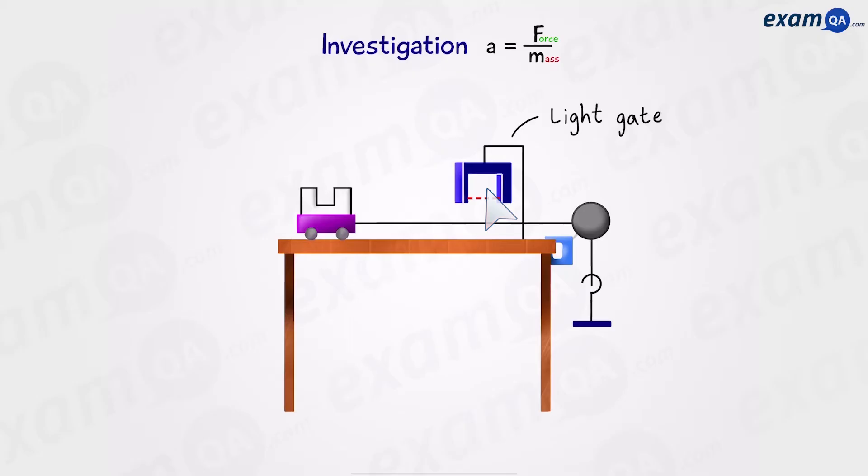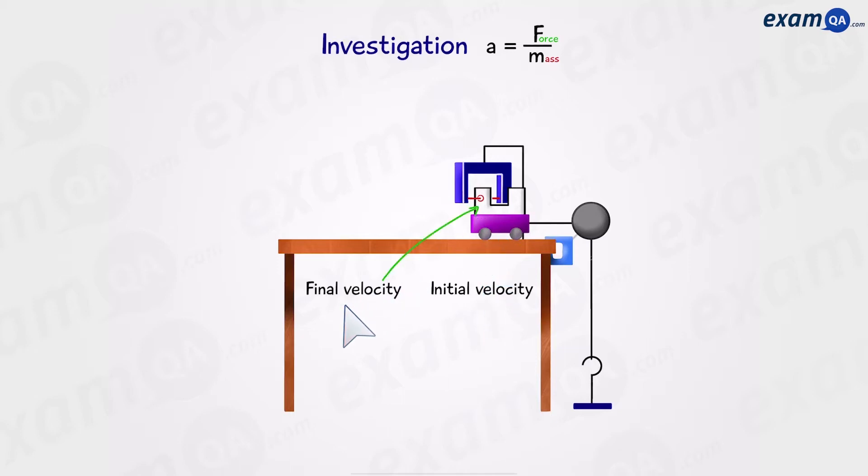The light gate will be attached to your computer, which is not shown in this diagram. When the mass is pulled down, the trolley will move forward and the card will cut the laser in the light gate. The light gate will see how quickly the first part is moving, giving us the initial velocity, and then how quickly the second part is moving, giving us the final velocity.